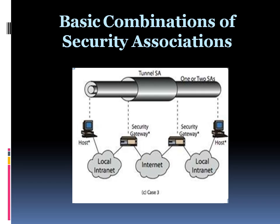Case 3 builds on Case 2 by adding end-to-end security. The same combinations discussed for Cases 1 and 2 are allowed here. The gateway-to-gateway tunnel provides authentication, confidentiality, or both for all traffic between the end systems. When the gateway-to-gateway tunnel is ESP, it also provides a limited form of traffic confidentiality. Individual hosts can implement any additional IPSec services required for given applications or users by means of end-to-end SAs.